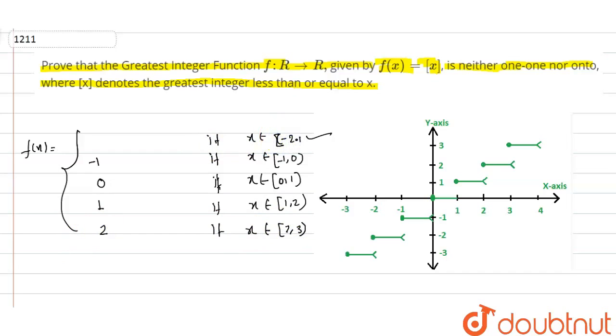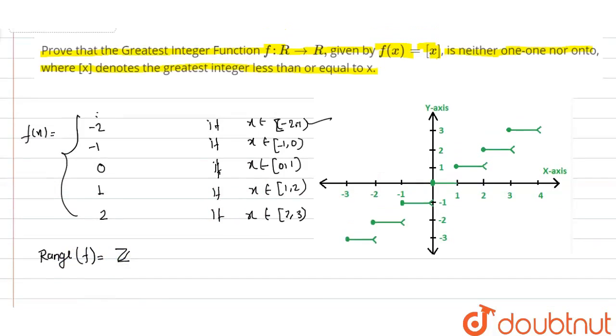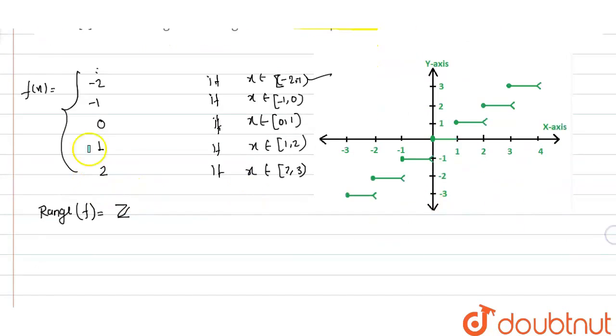[1,2), then f(x) is equal to 1, and similarly -2 and so on.